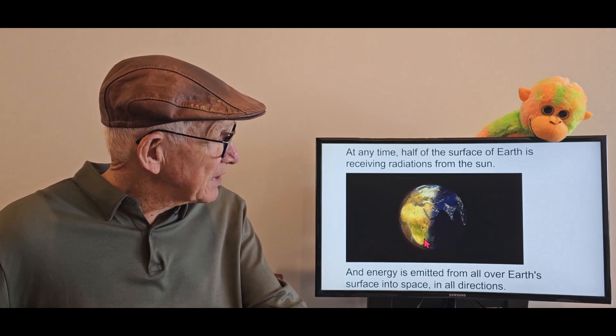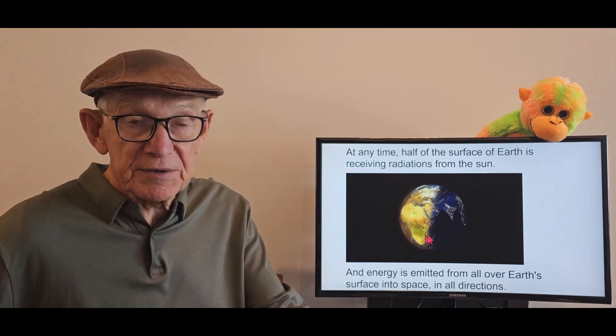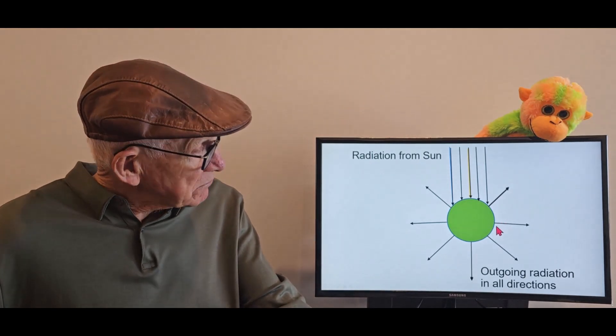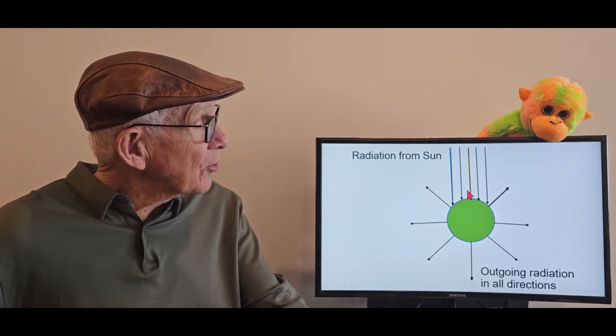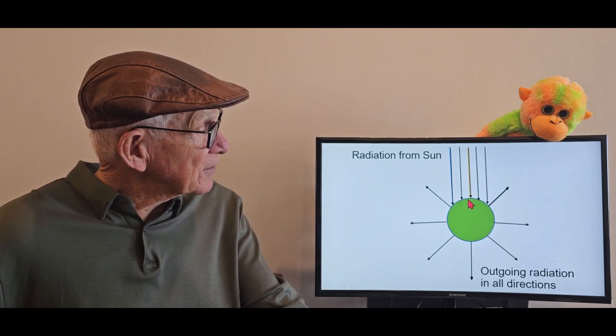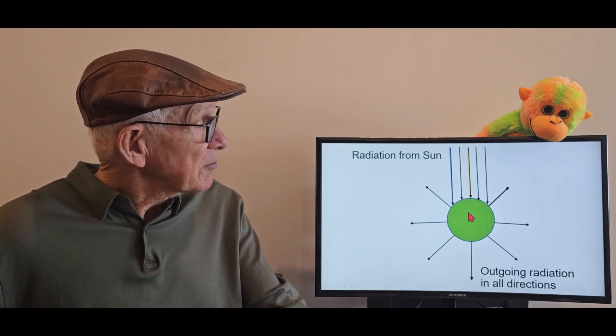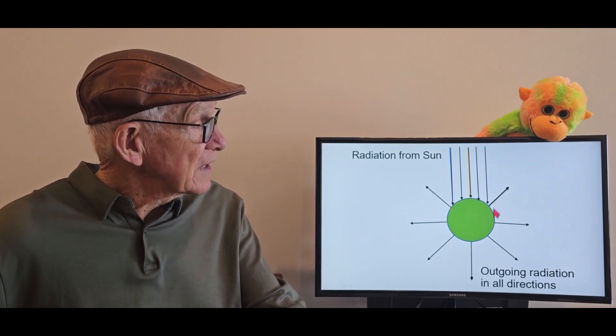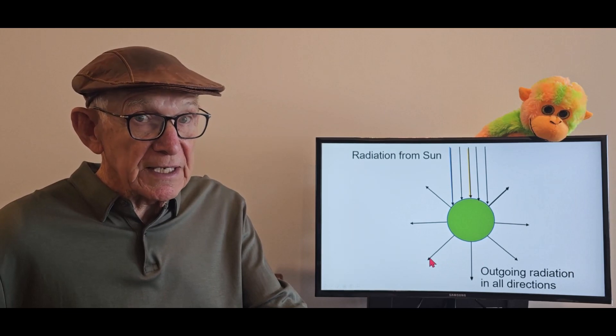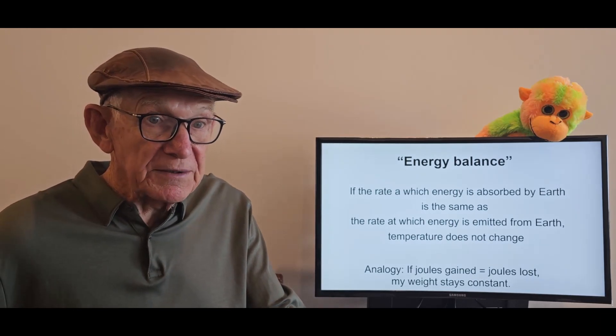And at the same time, energy is emitted from all over the surface of the Earth into space in all directions. Let me portray that in a cartoon. In a more or less parallel beam of radiations, energy is arriving on one half of the surface of the Earth. But at the same time, from all over the surface of the Earth, in every direction, energy is being lost as radiations. So, the concept of energy balance. Simple. Very, very simple.